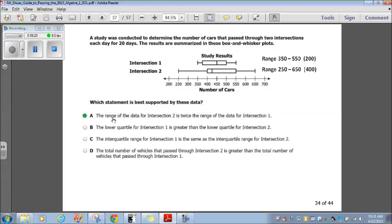But just to double check, just to make sure, let's look at the other answer choices. The lower quartile for intersection one is greater than the lower quartile for intersection two. Well, you can look here. Intersection two lower quartile is way greater than intersection one. So that's not right. The interquartile range for intersection one is the same as the interquartile range for intersection two. Interquartile range basically means this part here from quarter one to quarter three. Now, you can look at two and see that this is much larger than intersection two. So that's not right.